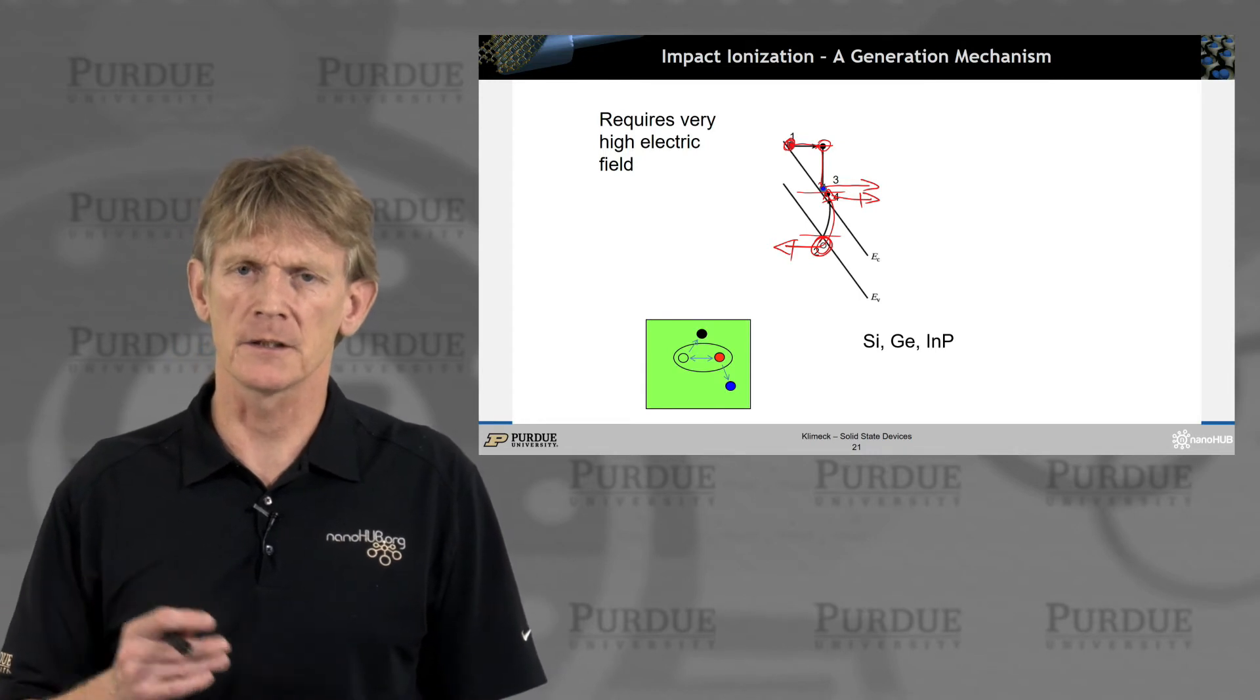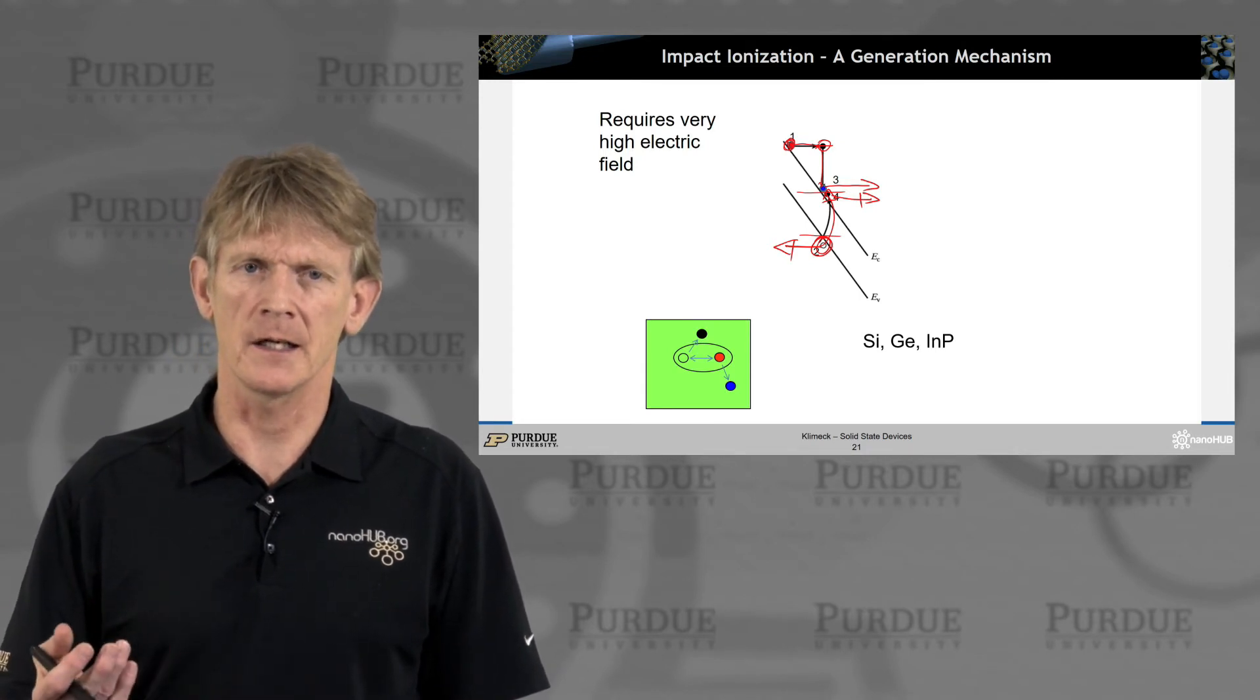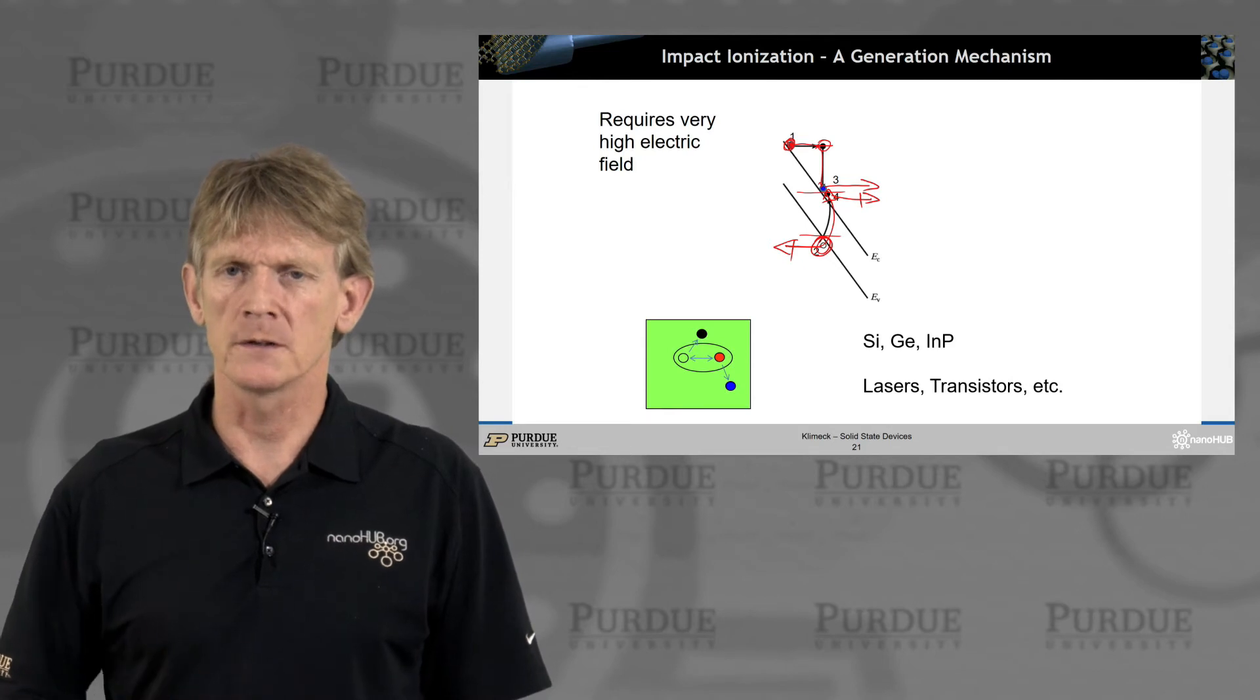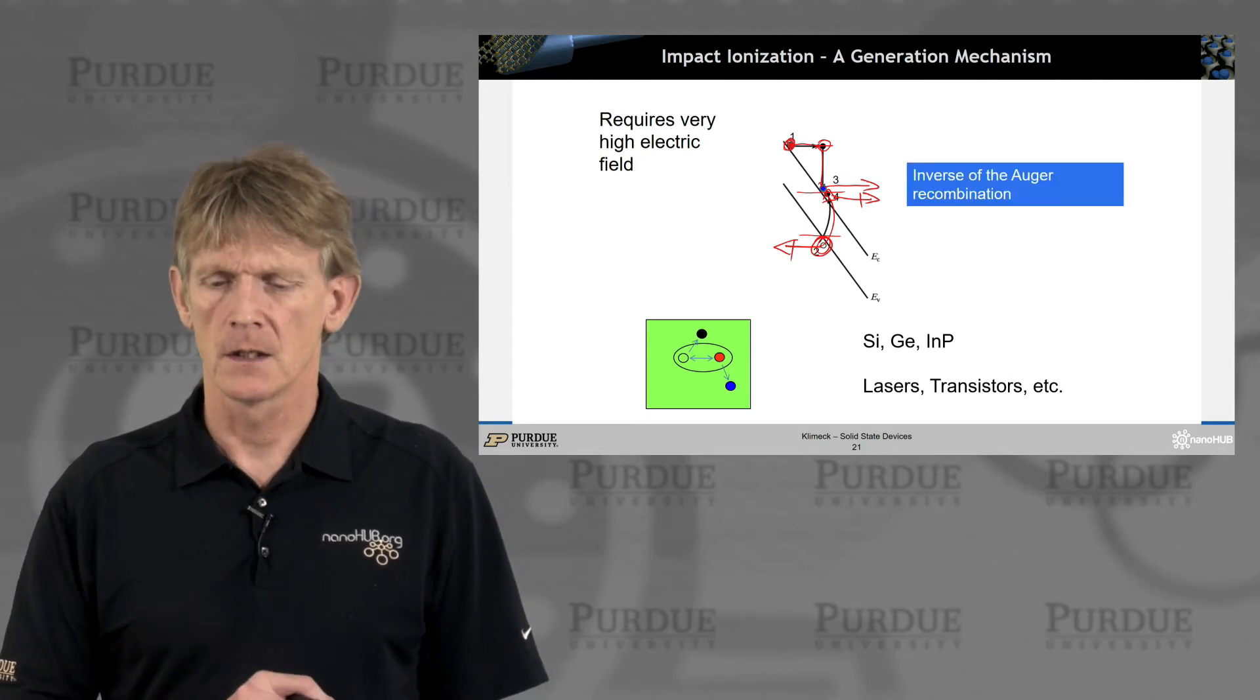That happens in silicon, germanium, indium phosphide, under high electric fields. And it's important in lasers and transistors. This process is the inverse of a so-called Auger recombination.